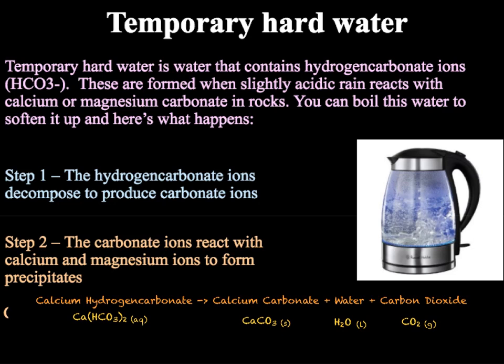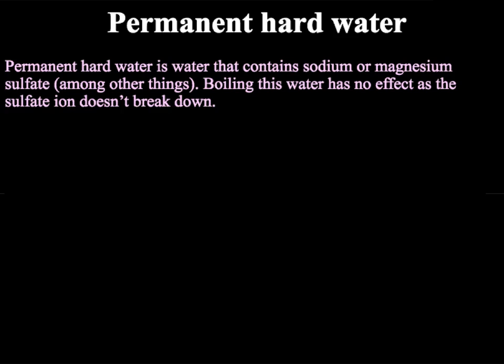Boiling will have no effect on permanent hard water as it will not affect the sulphate ion. Permanent hard water, on the other hand, is hard water that cannot be softened via boiling, because it contains calcium or magnesium sulphate. Both of these ions dissolve in water — magnesium sulphate completely dissolves, and calcium sulphate partially dissolves, making the water slightly cloudy.